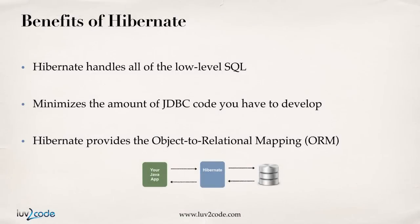So what are the benefits of Hibernate? Basically, Hibernate handles all of the low-level SQL code, so it actually minimizes the amount of JDBC code you have to develop. Hibernate provides the object-to-relational mapping and it makes it really easy to create apps that store and retrieve objects from the database.